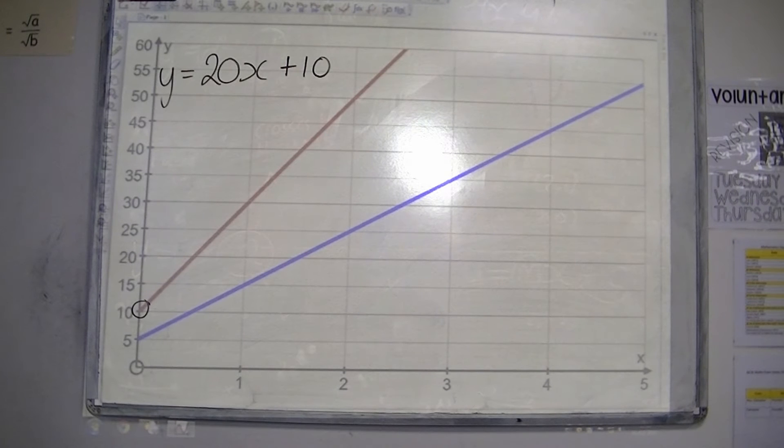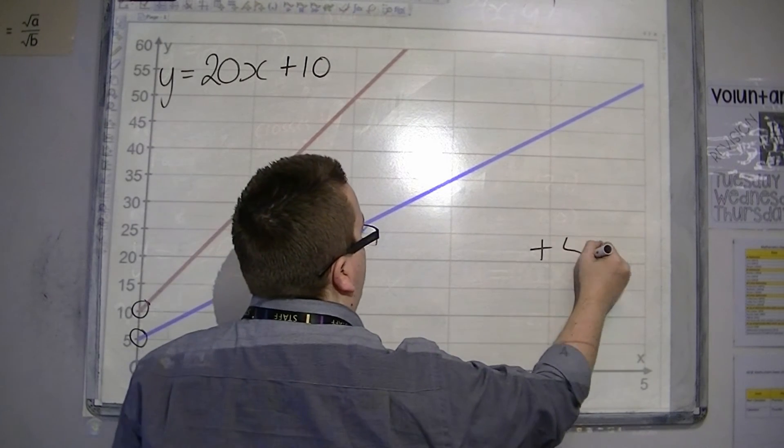Now for the blue line. It's crossing the y-axis at 5. So we definitely have plus 5 on the end.